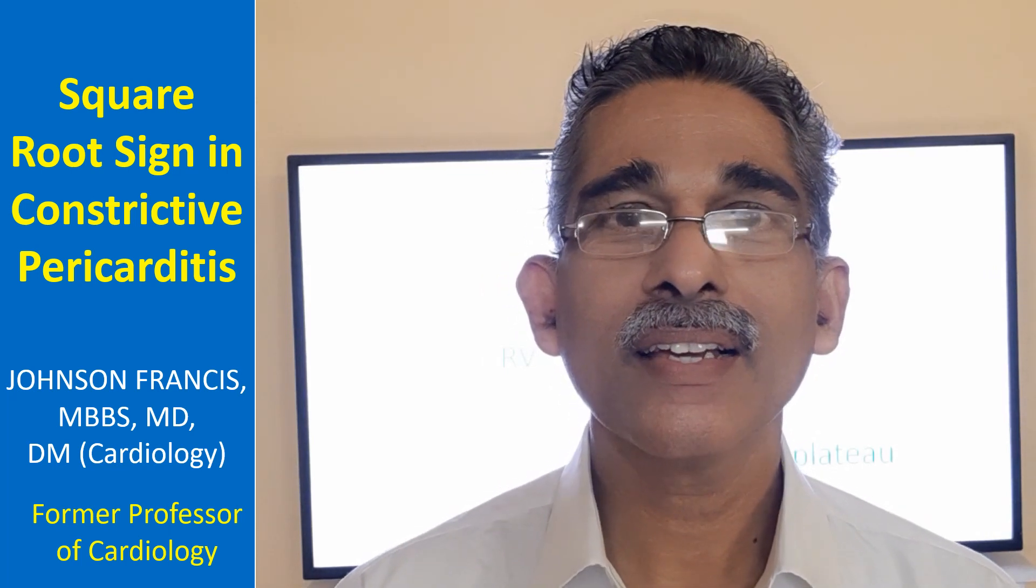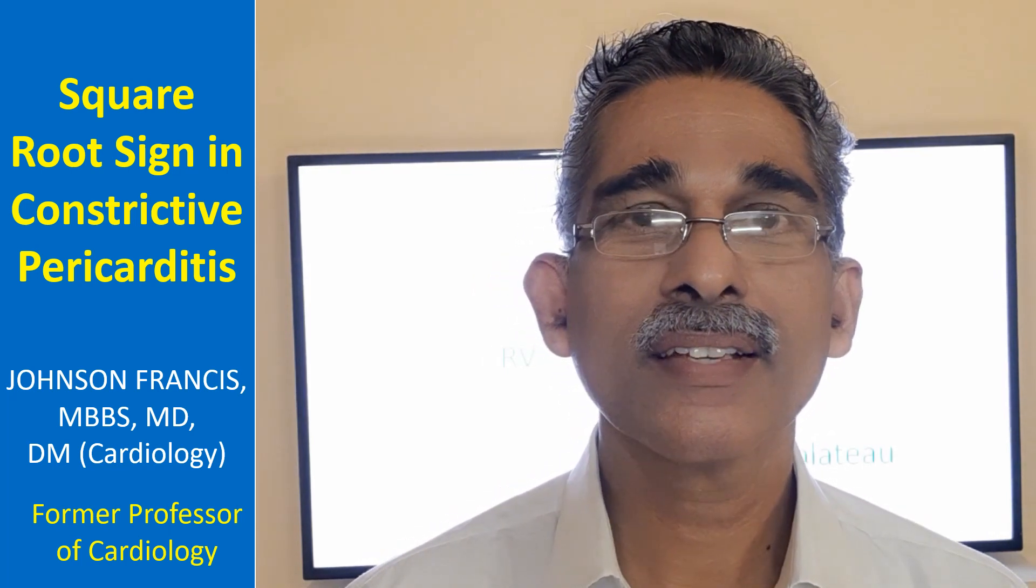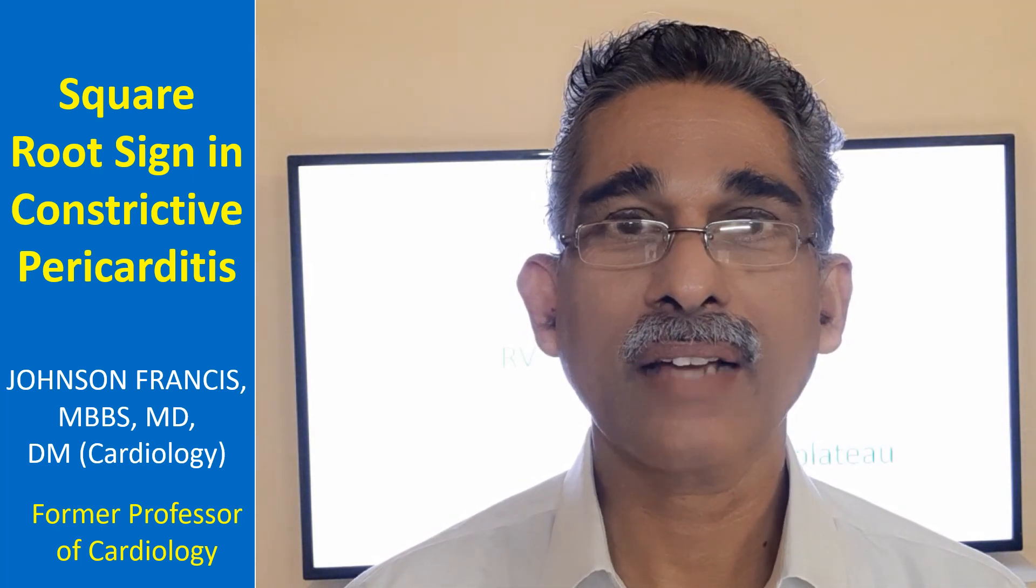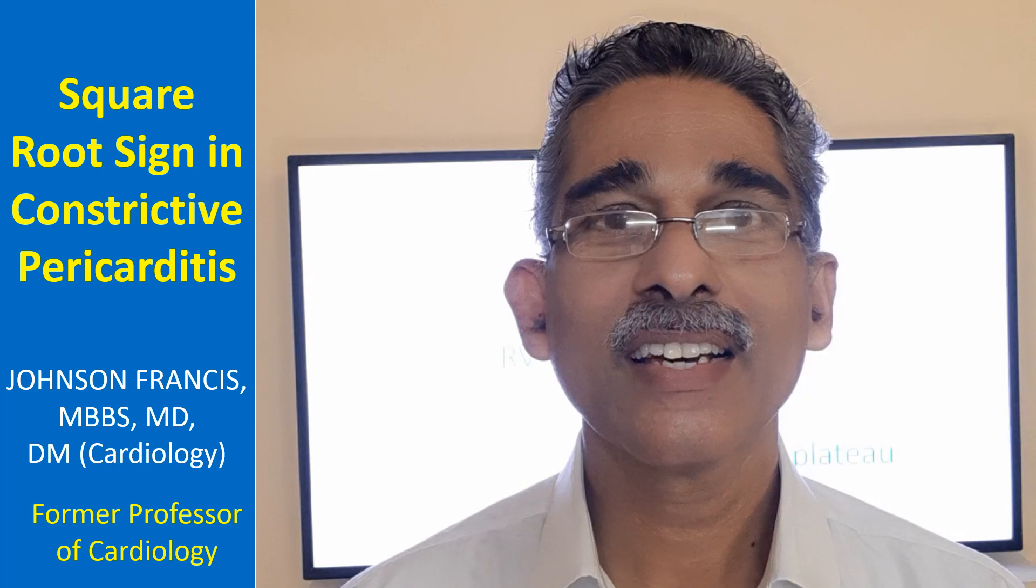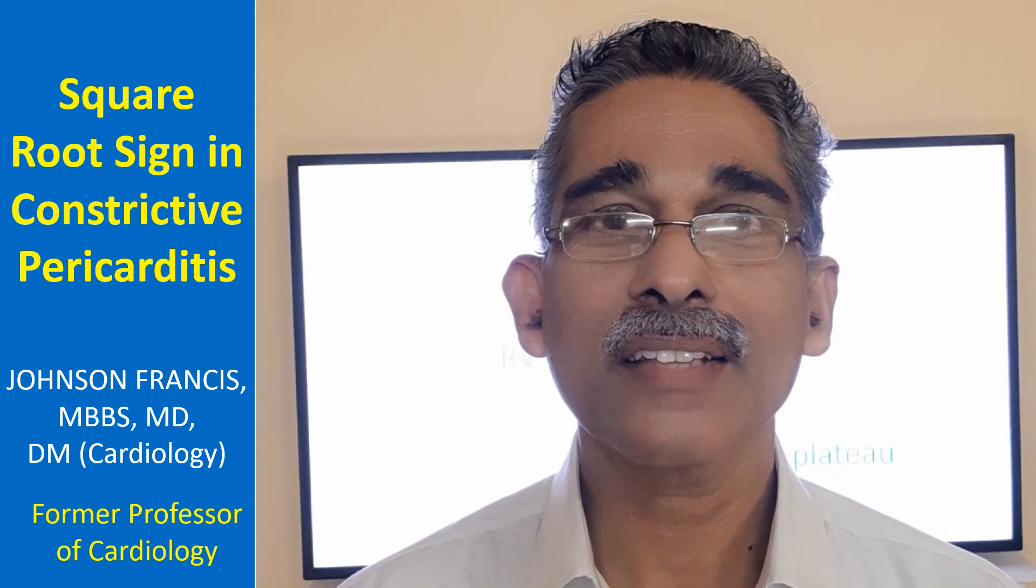Pericardial thickening in constrictive pericarditis can be seen on echocardiography or better on CT thorax. Yet, demonstration of constrictive physiology requires cardiac catheterization.